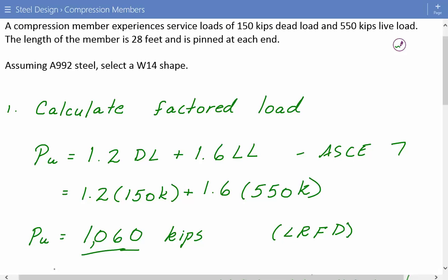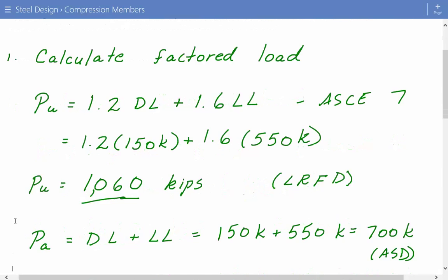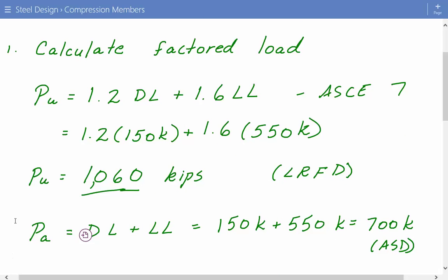Now we'll calculate the factored load for ASD, also based on ASCE7. The governing load combination will be dead load plus live load, so 150 kips plus 550 kips. So 700 kips is our factored load for ASD.